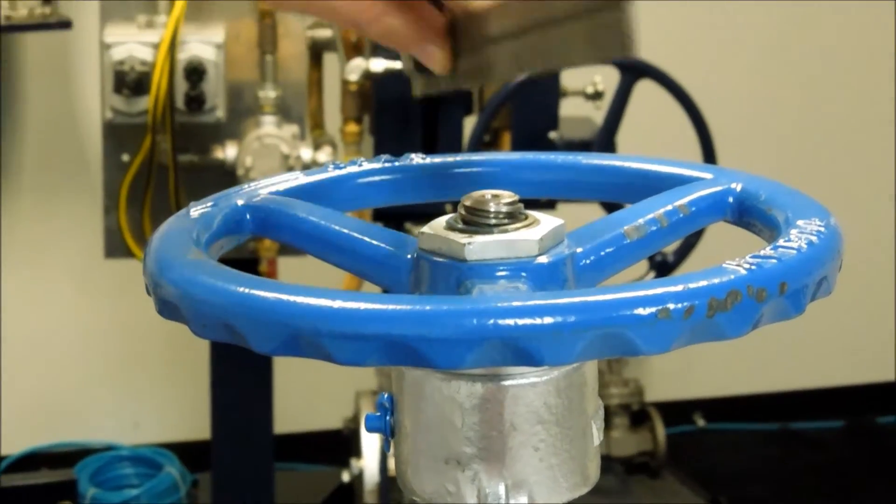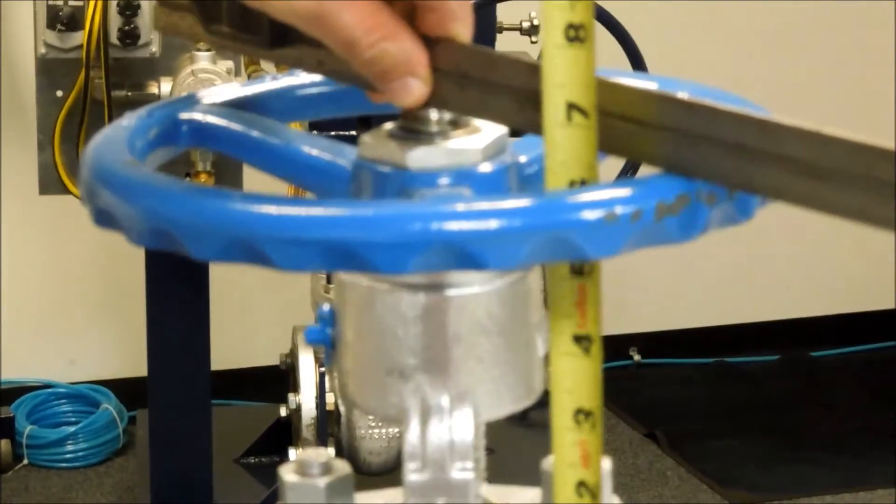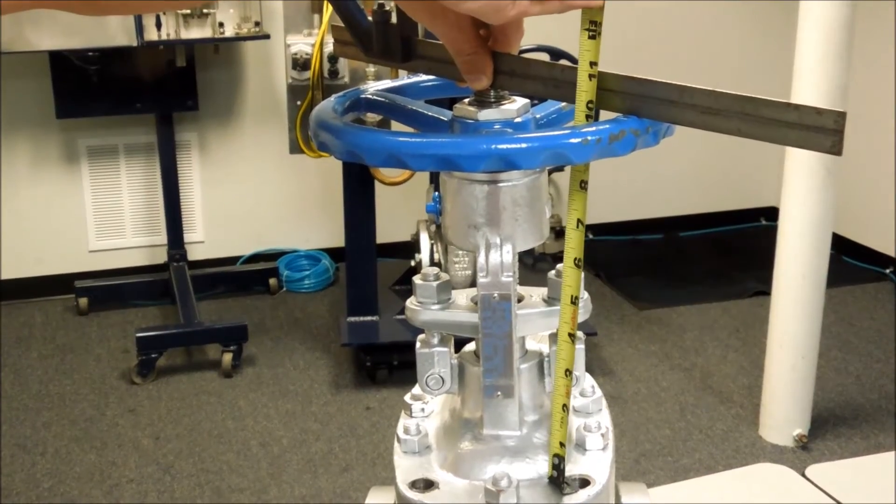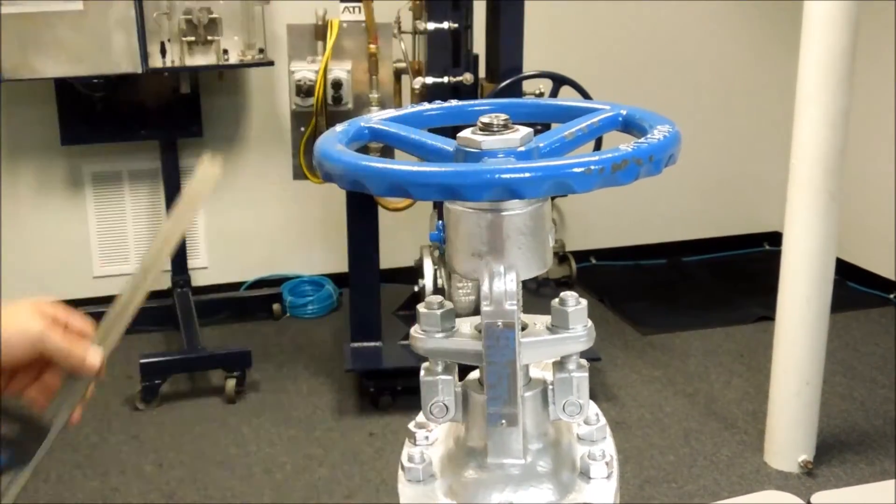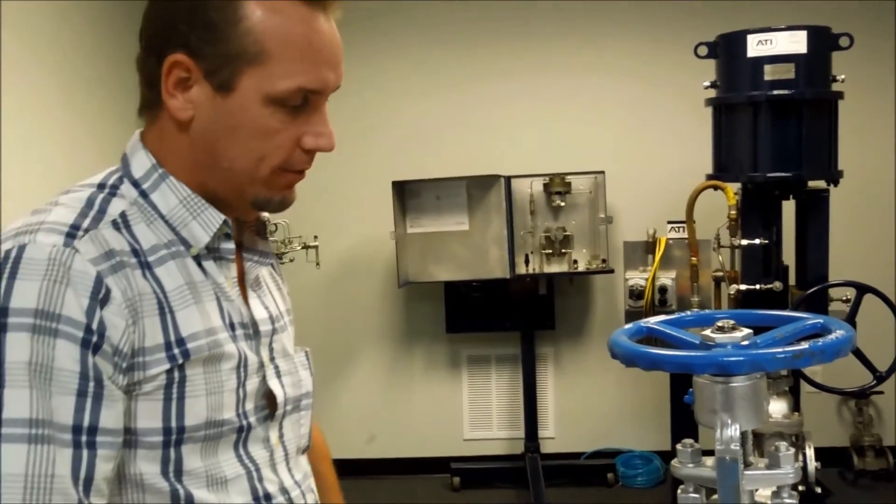Now we are going to obtain the closed stem height using the same process, measuring from one surface to the other. And the difference between the open stem height and the closed stem height is going to be your valve travel.